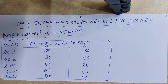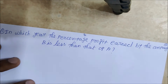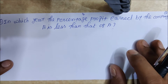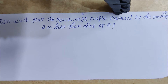We will talk about 3 questions — simple, shorter questions. Question number 1: In which year is the percentage profit earned by Company B less than that of Company A?